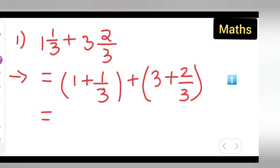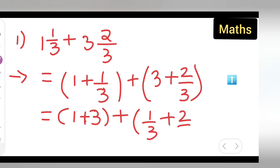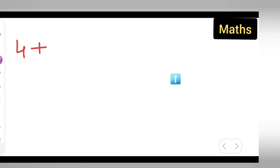Add one plus three for the whole numbers, and then add the remaining fractions: one-upon-three plus two-upon-three. One plus three gives you four, so you write down four, plus the fraction part.